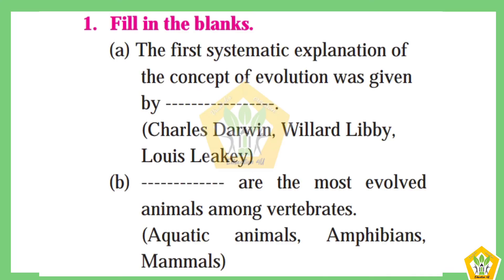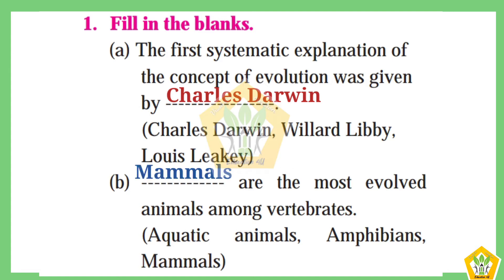Question number one: Fill in the blanks. A) The first systematic explanation of the concept of evolution was given by — the answer is Charles Darwin. B) Dash are the most evolved animals among vertebrates — the answer is mammals.